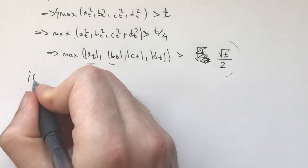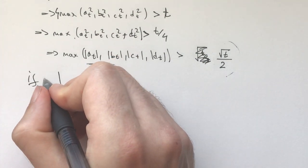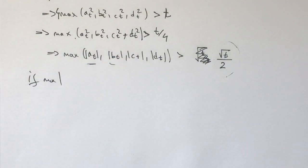From the sum of squares greater than t, we have that 4 times the biggest one of these squares is greater than t, which means that the biggest one is greater than t over 4, which means that the absolute value of the biggest one is greater than the square root of t over 2. Now, if the absolute value of the max is equal to that number, if the number is positive, we are done. If it's negative, we have another case that we need to take care of.